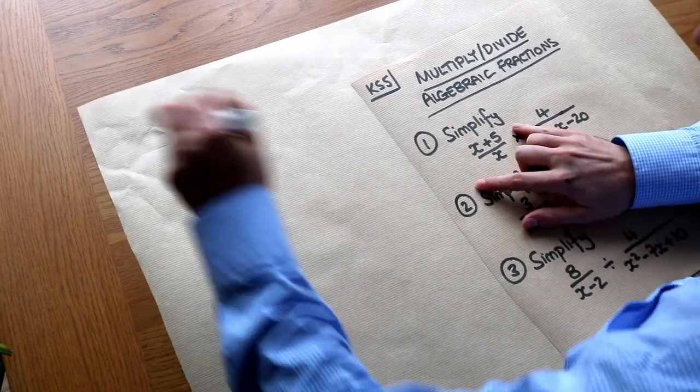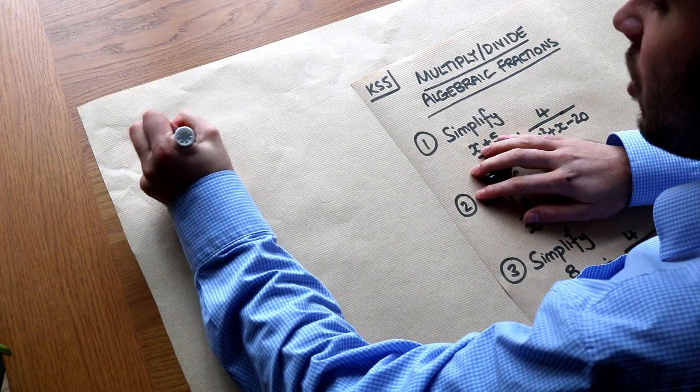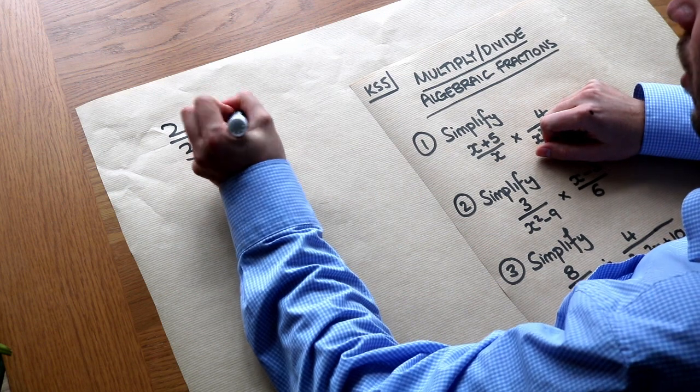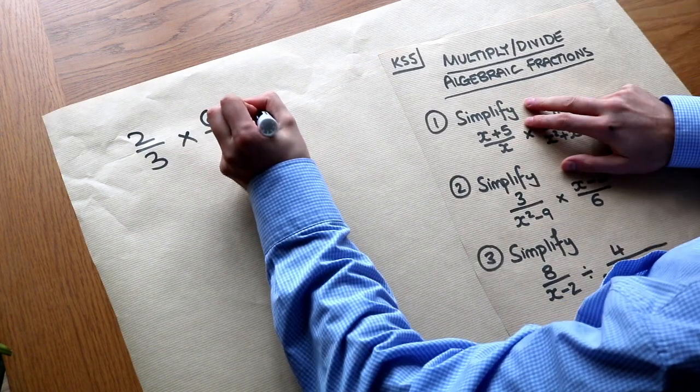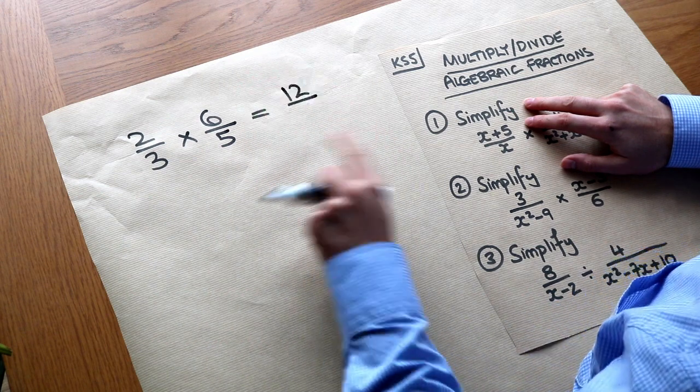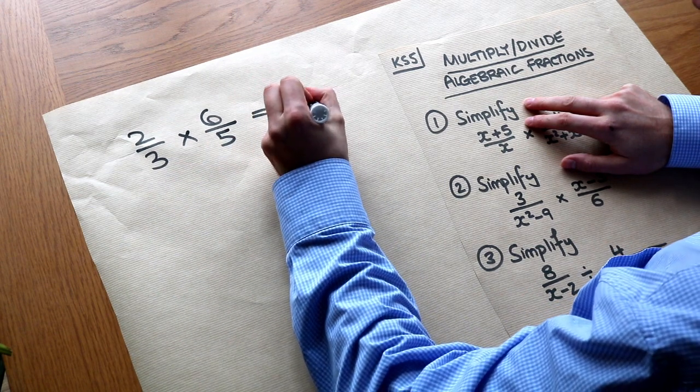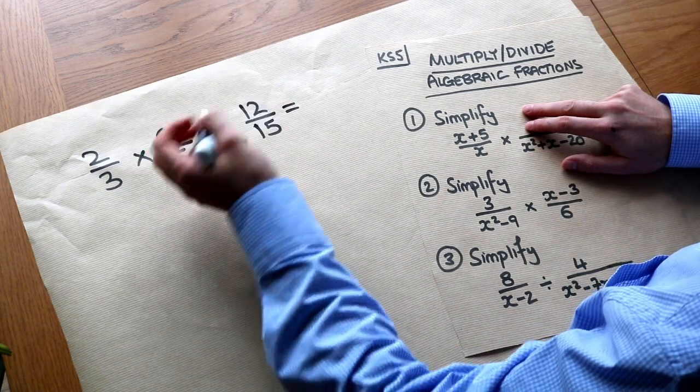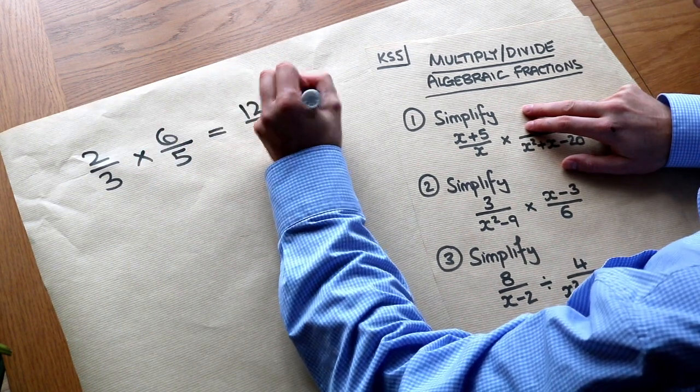Now hopefully you know how to multiply fractions together. If I had say 2 over 3 and I timesed it by say 6 over 5, then I can multiply the numerators together to get 12 and then I can multiply the denominators together to give 15, and then we can just simplify that fraction. So we can divide by 3 to get 4 over 5.